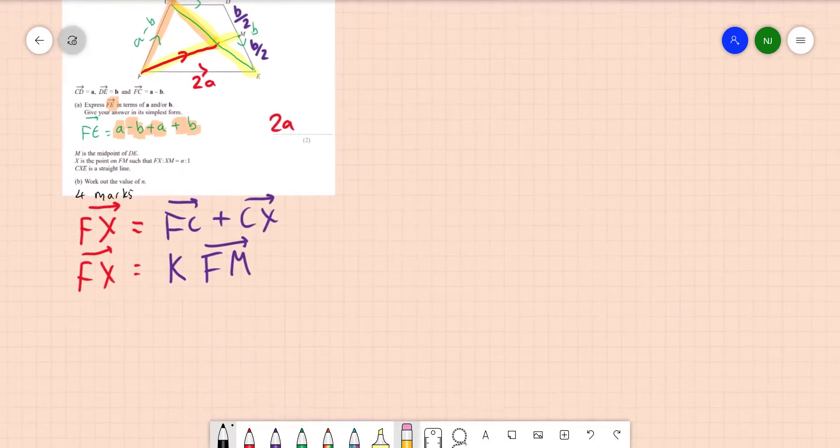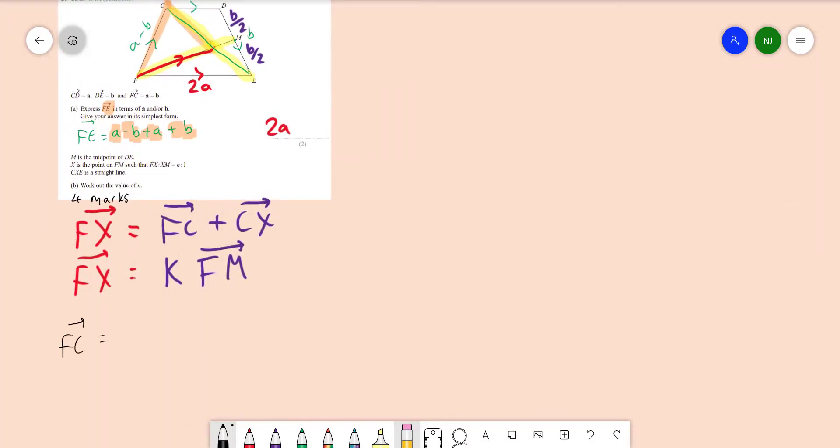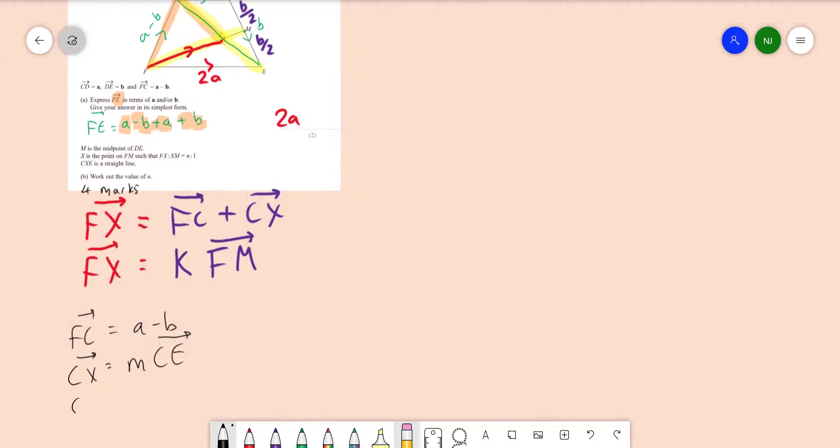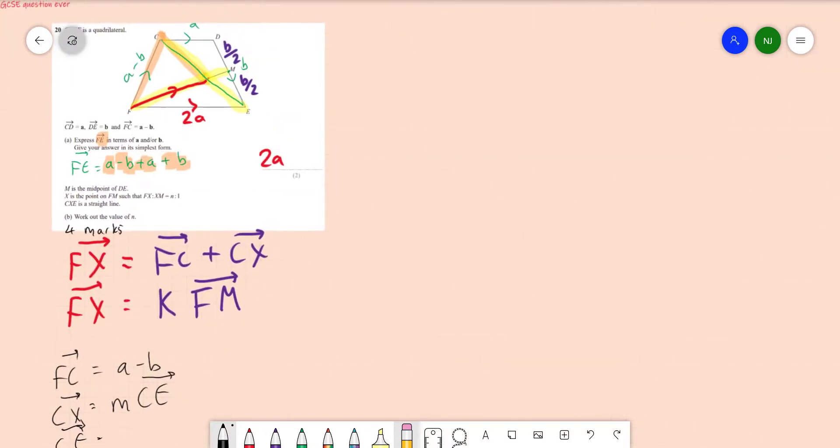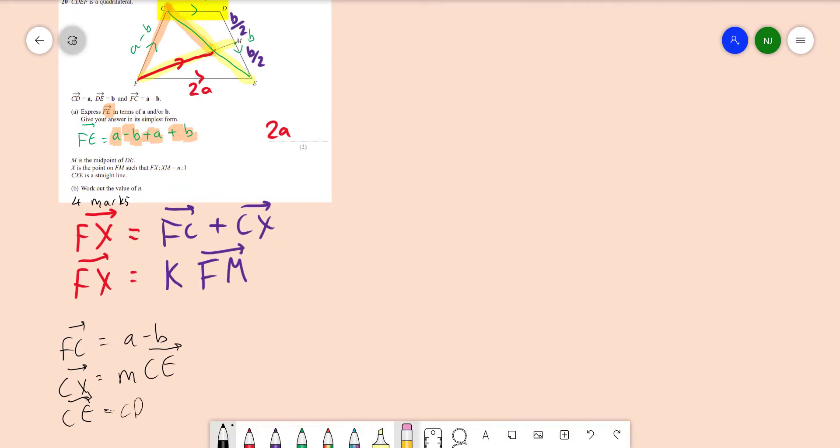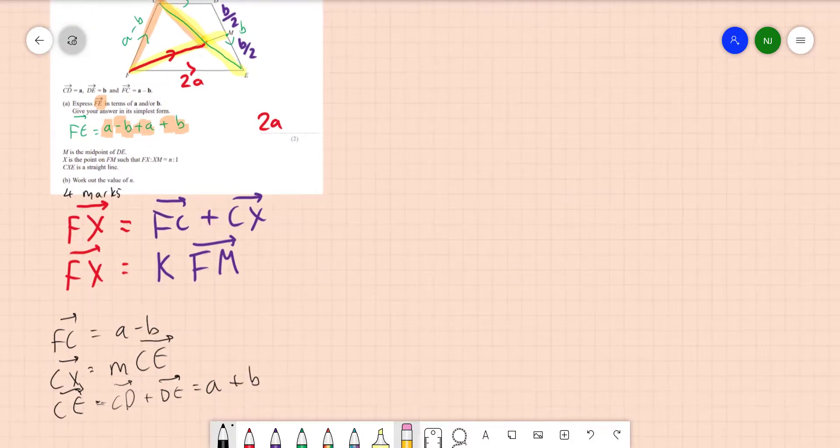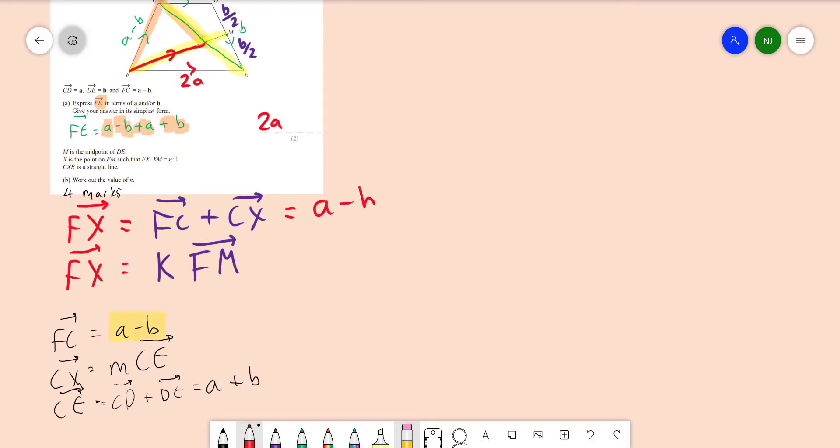Let's start with filling in some of these gaps. Now we know that fc is a minus b. We get told that in part a. Do we know cx? Well cx is just some amount of ce. So we can call it m, which is just some amount of ce. So we're going to need to find ce as well. So the vector ce, we can call that cd plus de. So we're going from c to d and then from d to e. So that's going to be cd is a, so it's a plus b. So ce is going to be a plus b. So now we have all the pieces for our first one. fc is going to be a minus b plus some amount of a plus b.